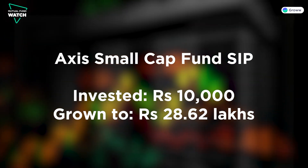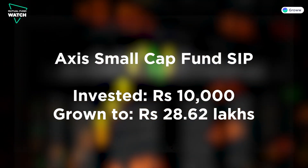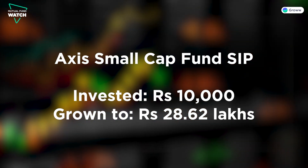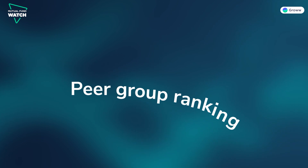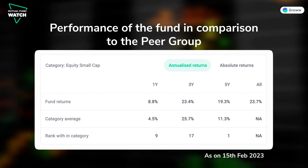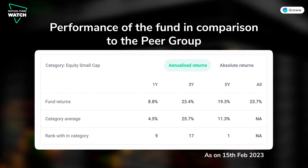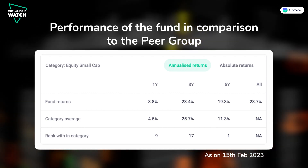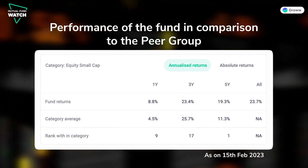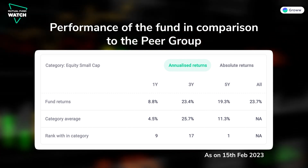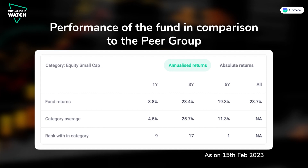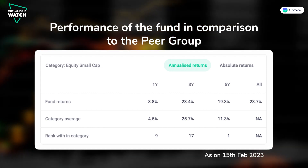If you invest ₹10,000 per month via SIP from November 2013 to December 2022, this fund would have given ₹28.62 lakhs. Now comparing this fund's performance with its peer group as on 15th February 2023: over 5 years, Axis Small Cap Fund has been the best performer in the small cap category. However, over the last three years, its rank dropped significantly to almost the bottom quartile. On a one-year return basis, the fund has pulled back to rank number nine, indicating performance improvement.